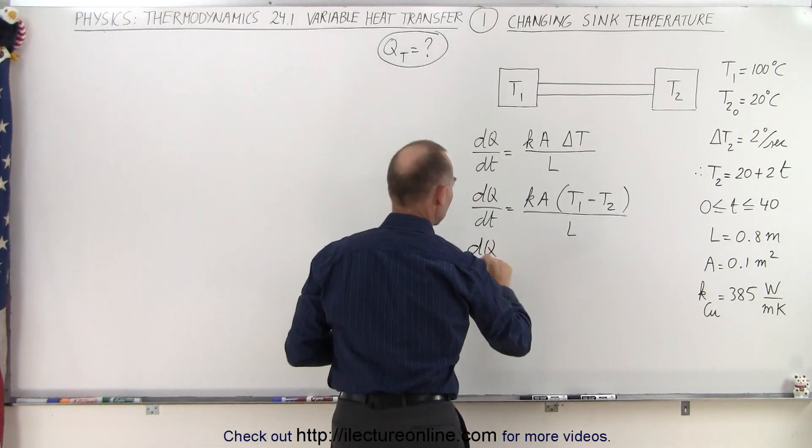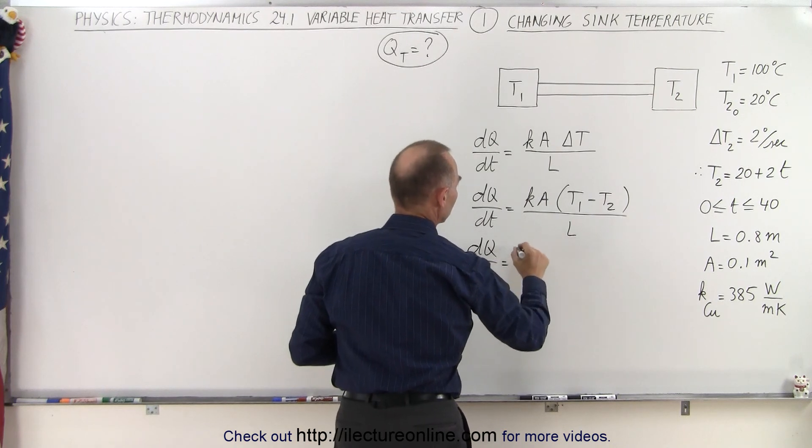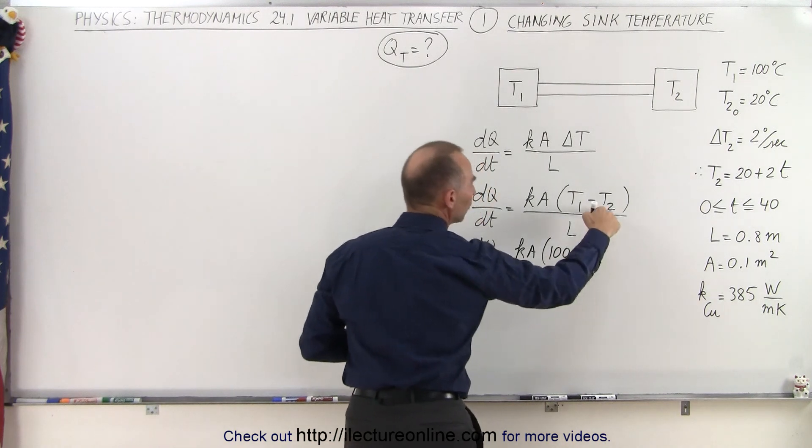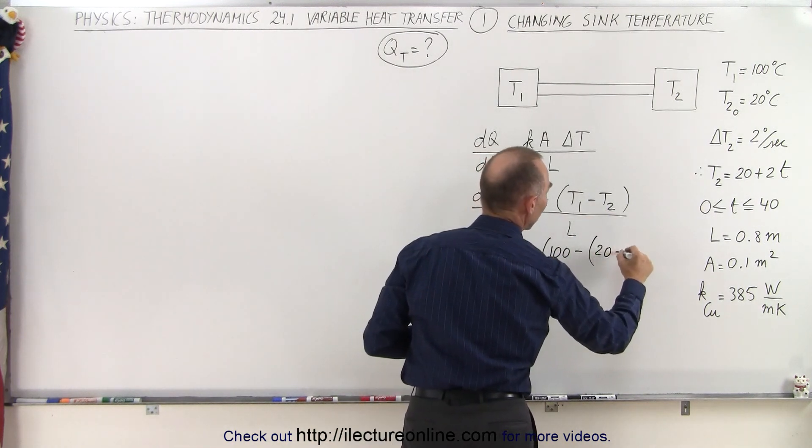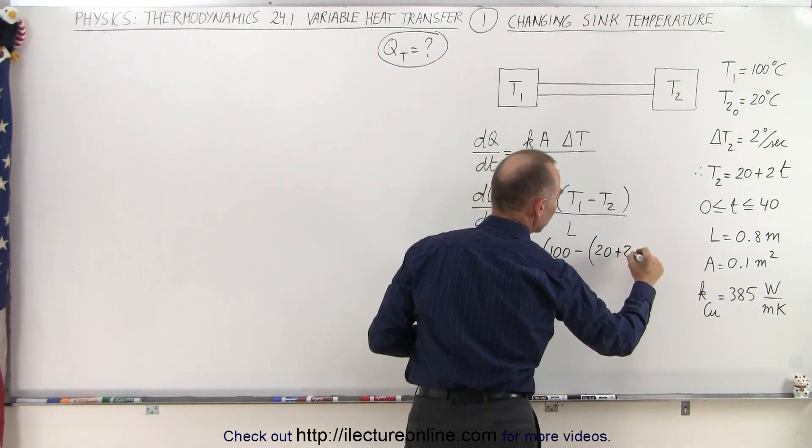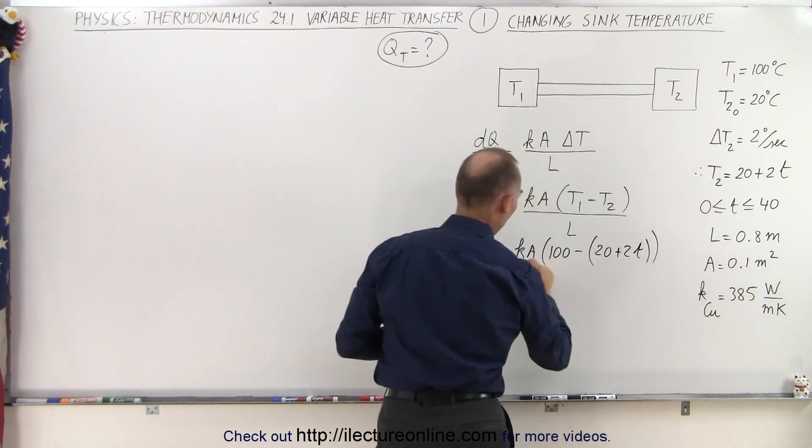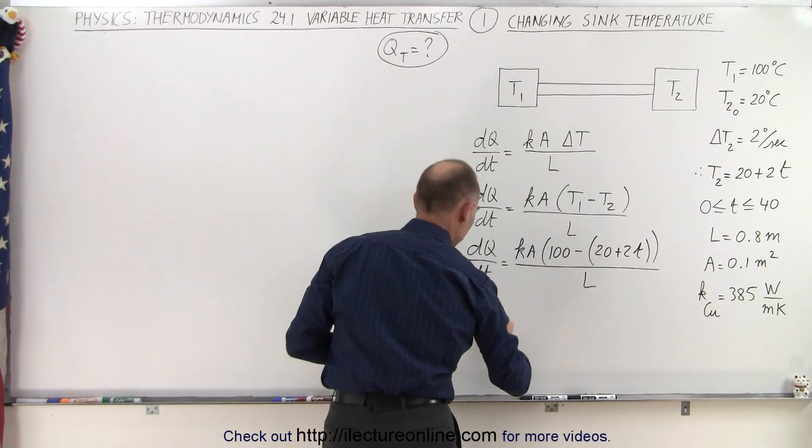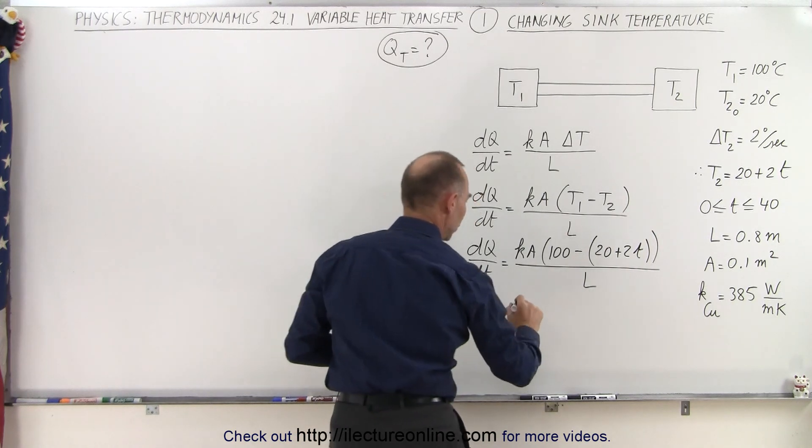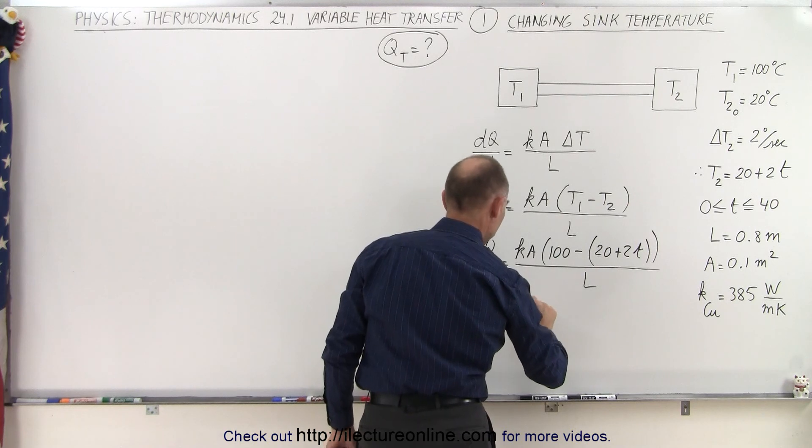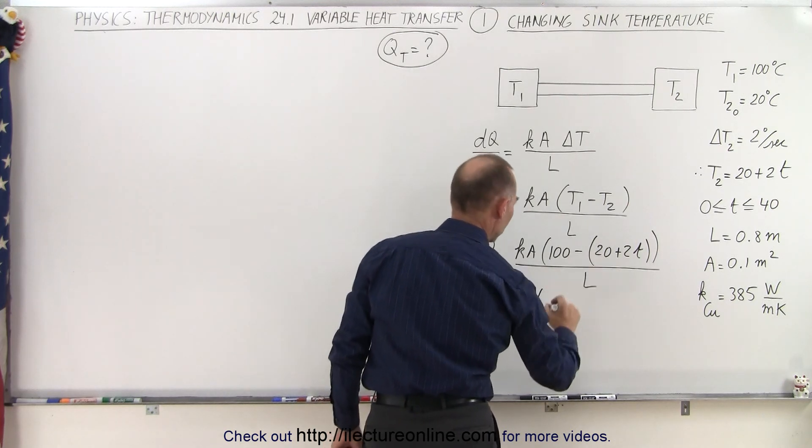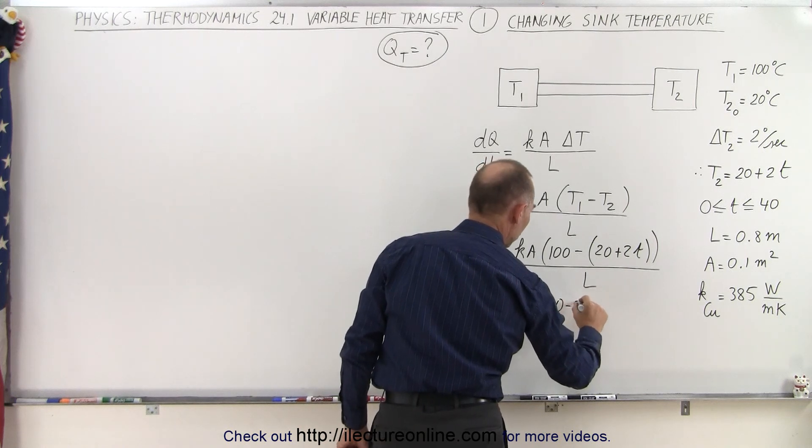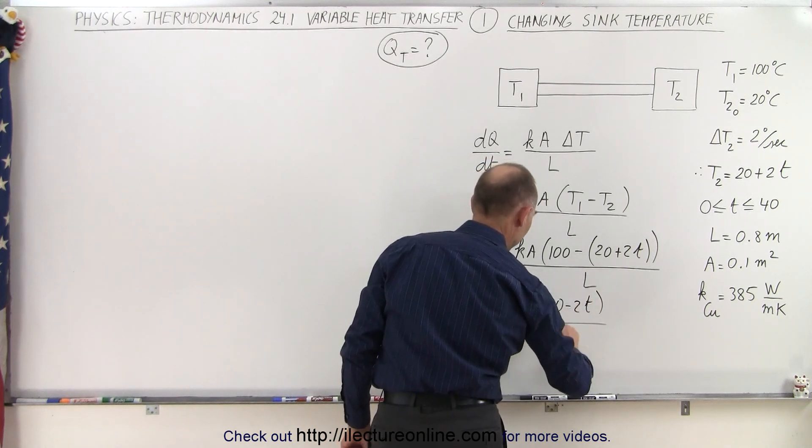So this can now be written as dQ/dt is equal to kA times 100 minus T2, which would be 20 plus 2t, like this, all divided by L. And if we then simplify that equation, that means dQ/dt is equal to kA times 100 minus 20, which is 80, and then minus times the plus would be minus 2t, all divided by L.